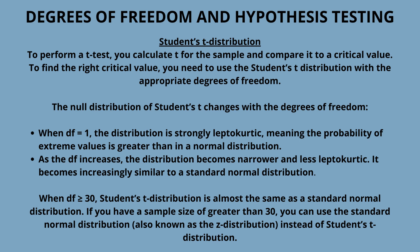However, you don't know the population mean, so first you need to estimate it using the sample mean. You calculate that the sample mean is 820 milligrams. By assuming the population mean has a certain value, you impose a restriction on the sample — the values in the sample must have a mean of 820 milligrams.